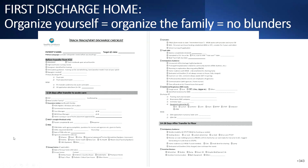For the first discharge home, if you organize yourself, you're going to organize the family so we don't have any blunders or misses. This is just the first two pages of a five-page list of things to do to get a trach-vent child home — organized by time: before they come out of the ICU, first two weeks, two to four weeks. Because I'm not just taking care of one family — I have 10, 20, 30, even 50 on my caseload — I follow a checklist for each patient so I don't miss anything, and I also use it as a charting tool.